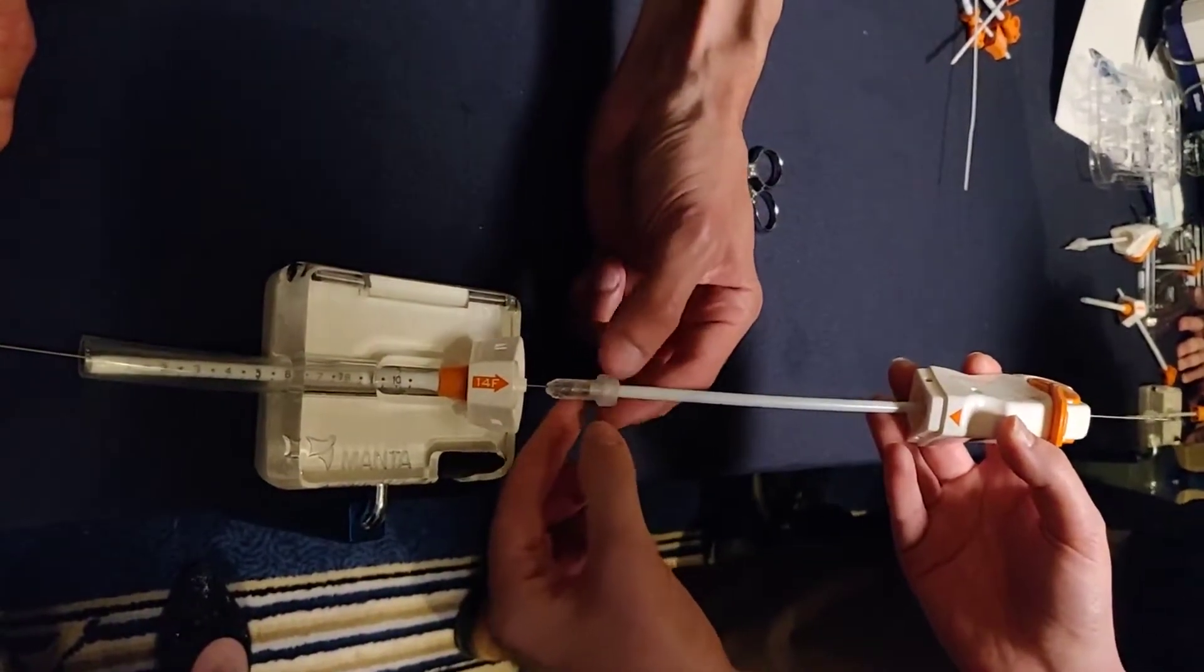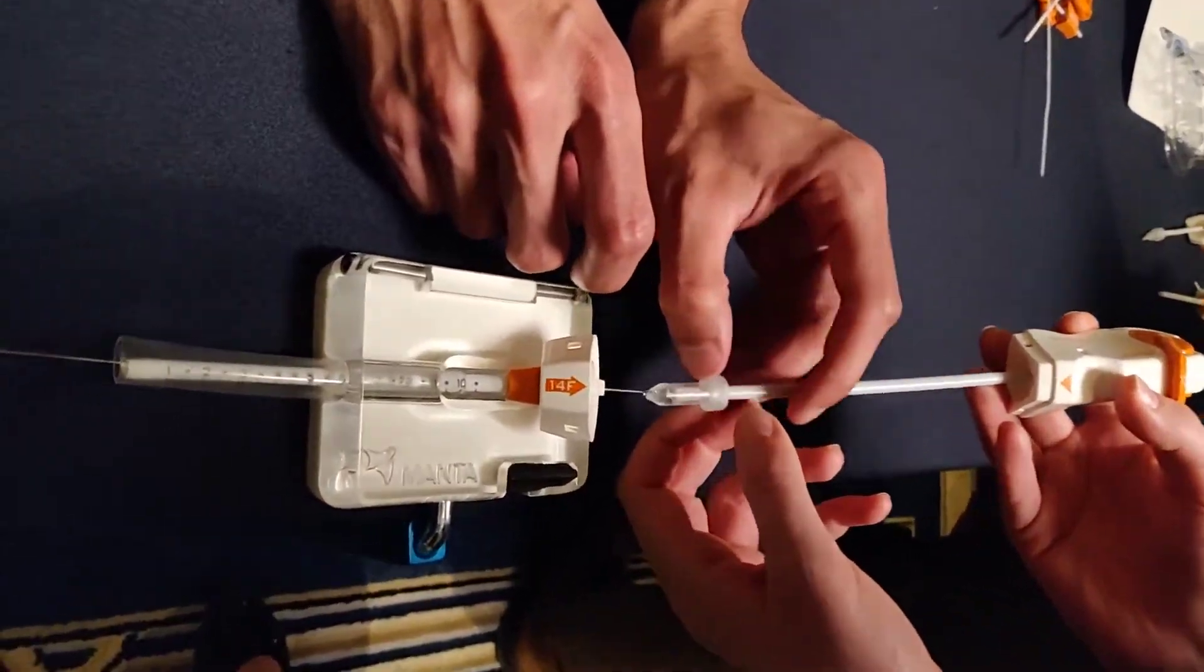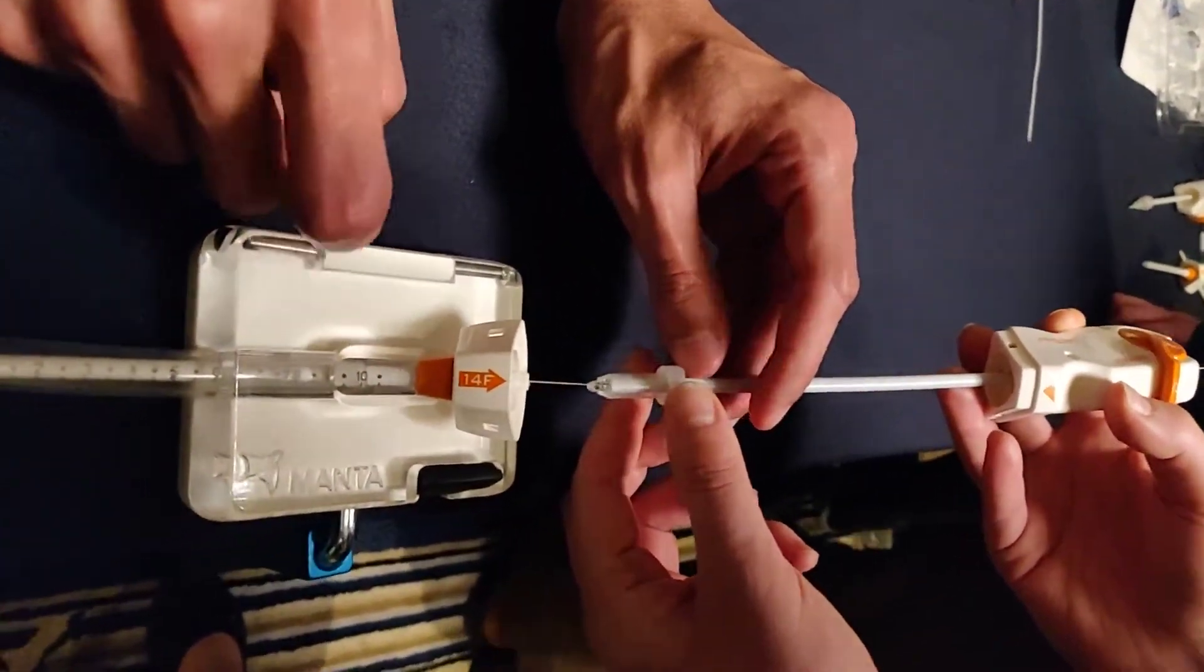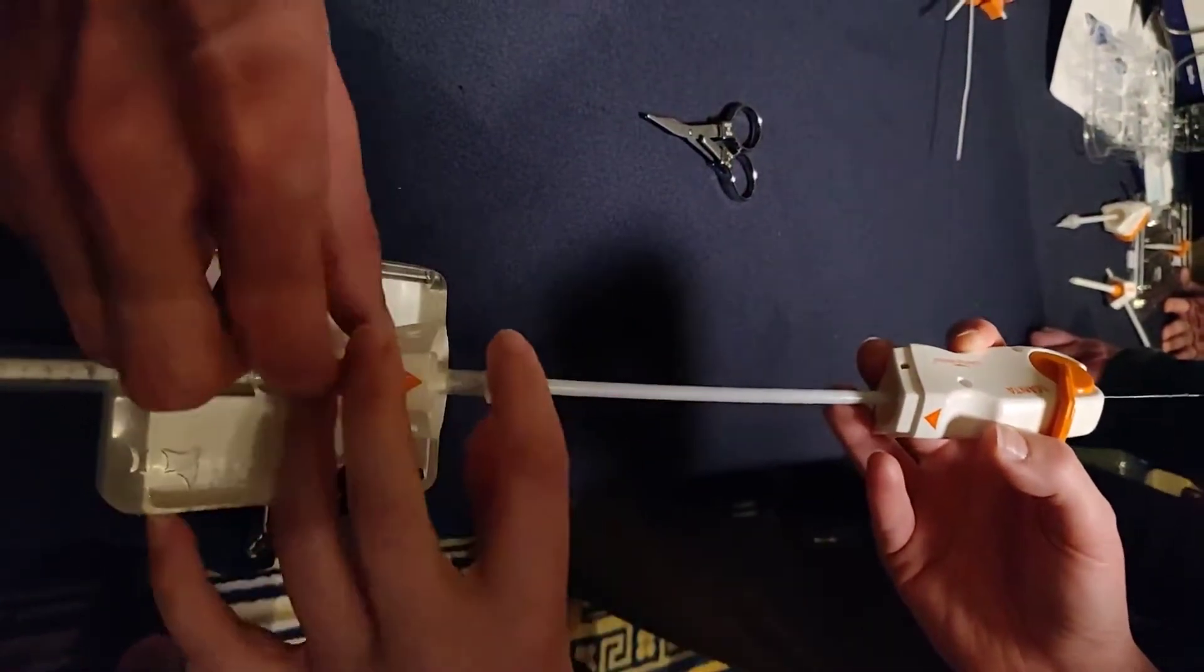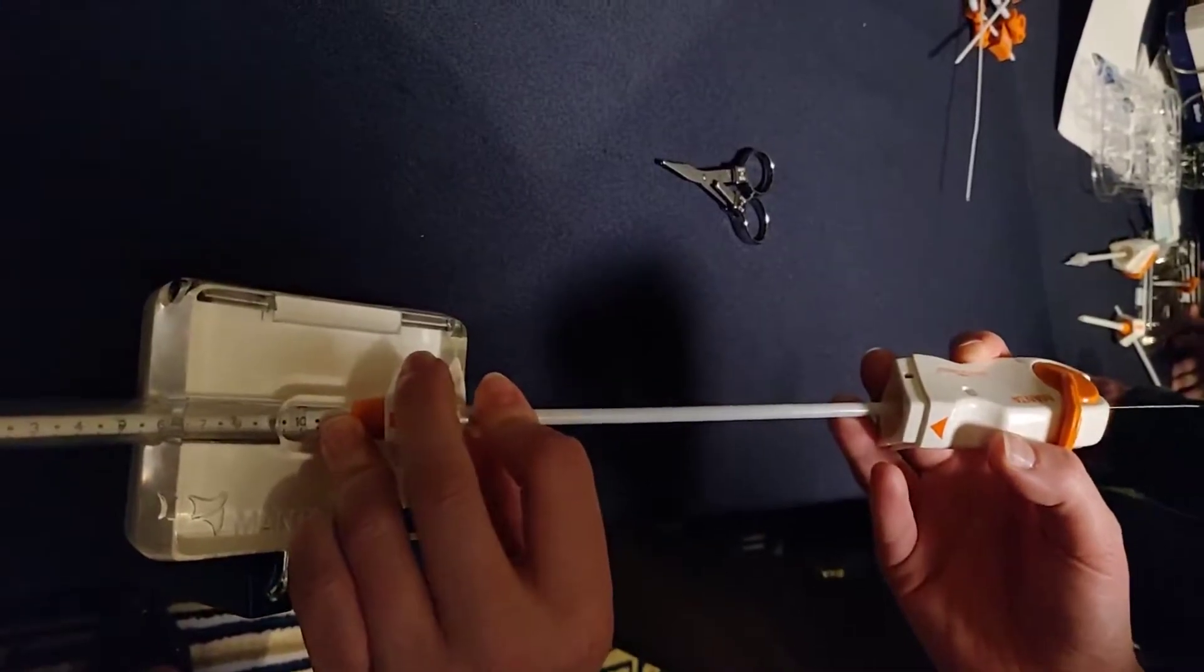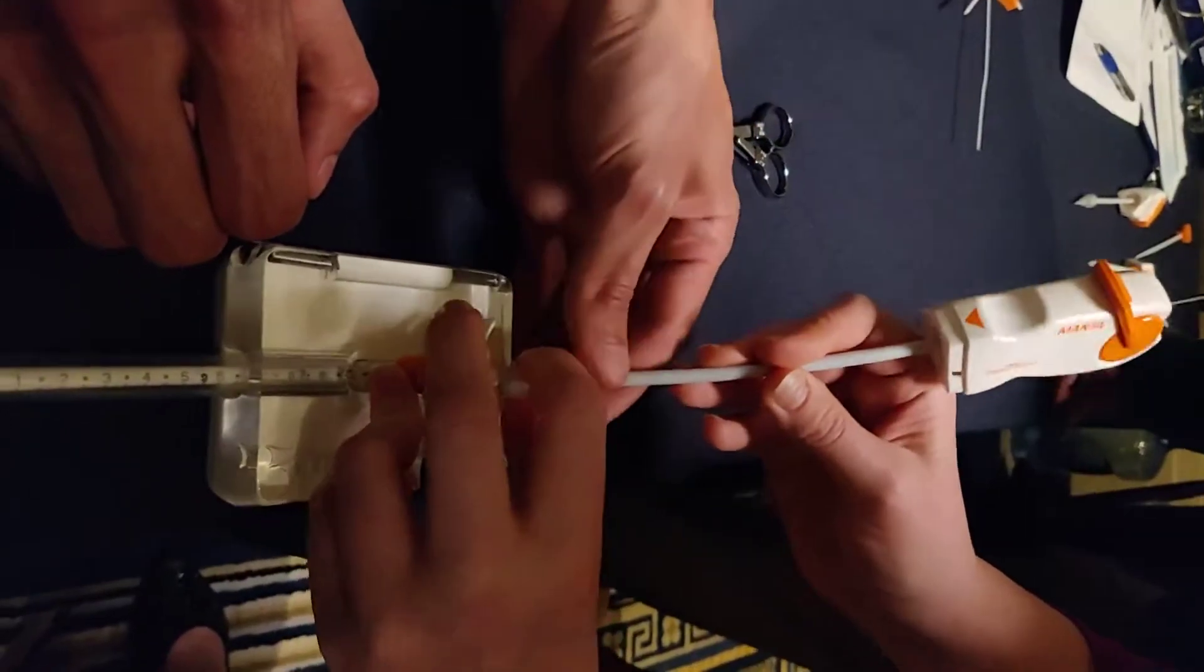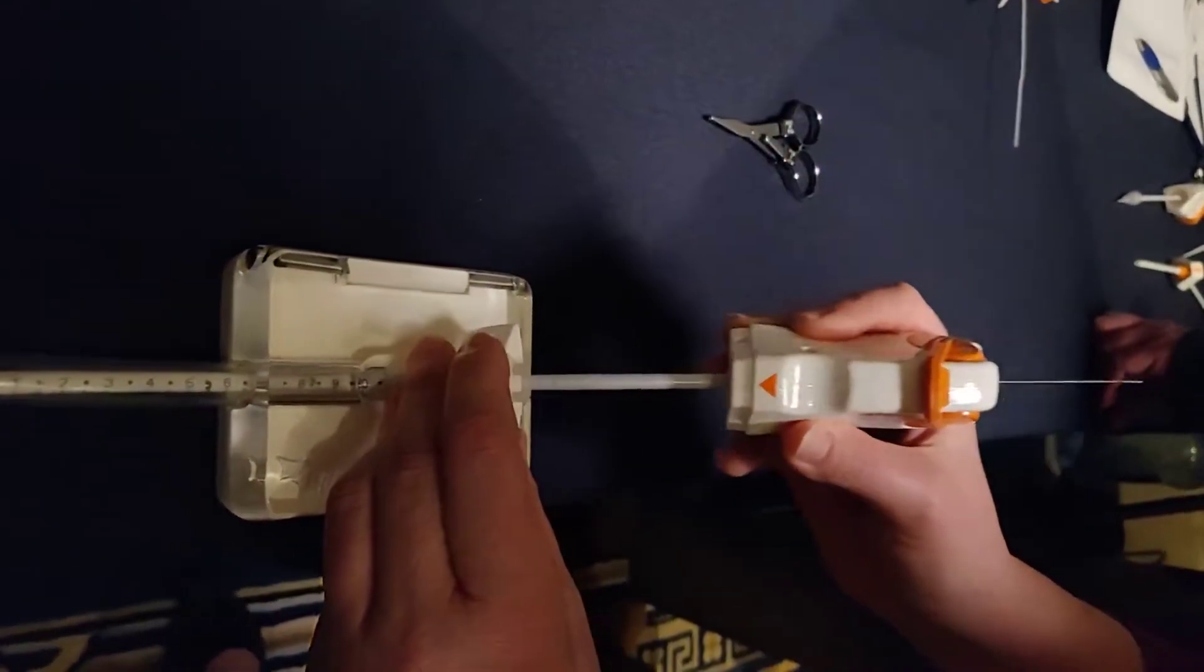Before we insert, this is key. We want to make sure that our anchor is covered. See what happens? It can be exposed and that can do damage to the actual sheath, so we always want to make sure it's nice and covered. Yep, insert that all the way.